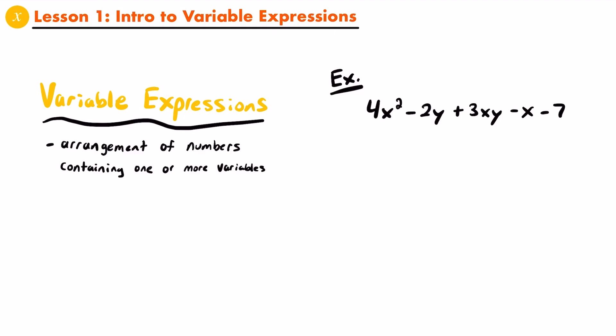If we zoom back out a little bit and think of this variable expression as a whole, we could think of it as being a combination or addition of different pieces that we call terms. Terms are the different pieces that you can see being added and subtracted from each other within the variable expression. So in our example here, there are five different terms: 4x squared, negative 2y, positive 3xy, negative x, and negative 7.